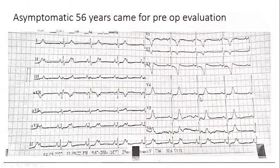How do you treat anti-dromic AVRT? Just ablate the pathway — break the circuit. Ablate the pathway and anti-dromic AVRT is gone.